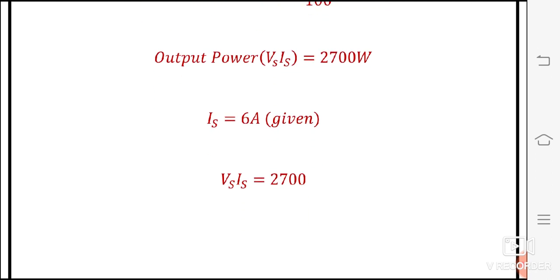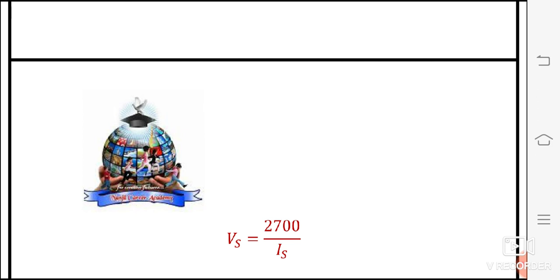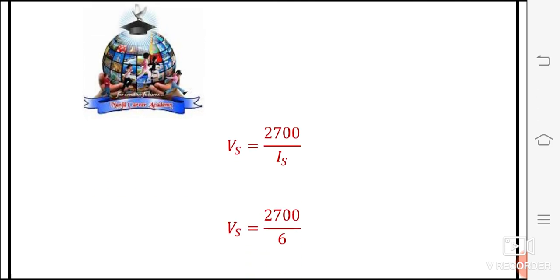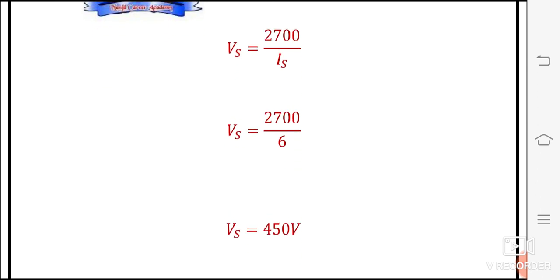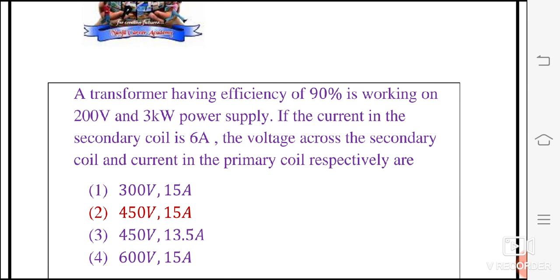IS is equal to 6 amperes, so VS is equal to 2700 divided by IS. The value of IS is 6, so VS is equal to 2700 divided by 6. Simplifying, we get VS is equal to 450 volts. Therefore, the final answers are: secondary voltage VS is equal to 450 volts, and primary current IP is equal to 15 amperes.